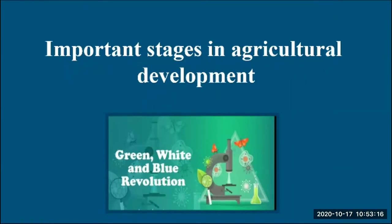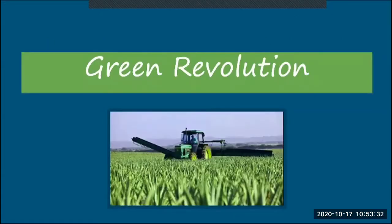Today's concern is the important stages in agricultural development, which is the last part of our chapter. We are going to see this in three ways: first is the Green Revolution, second is the White Revolution, and third is the Blue Revolution.